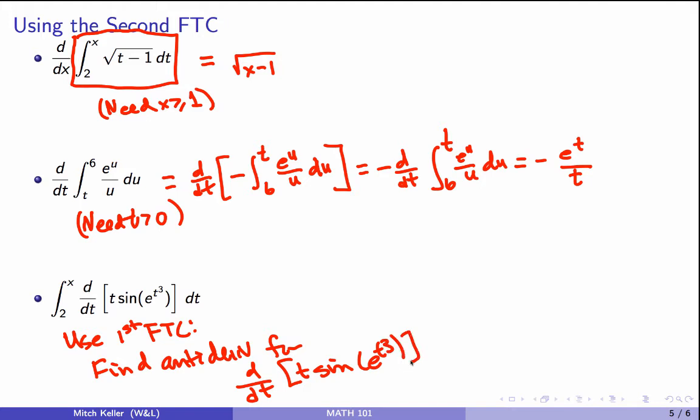Well, okay, if I differentiate t sine of e to the t cubed, I get the derivative of that. So an antiderivative is that function, so we'll use this. Since t sine of e to the t cubed is an antiderivative for the derivative with respect to t of t sine of e to the t cubed, and we generally would rather write this in this form.